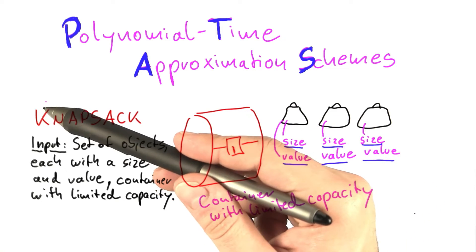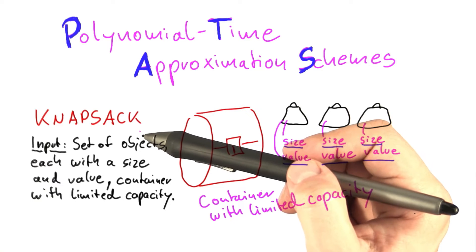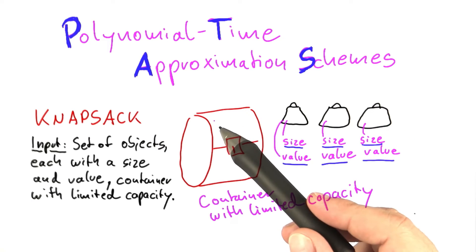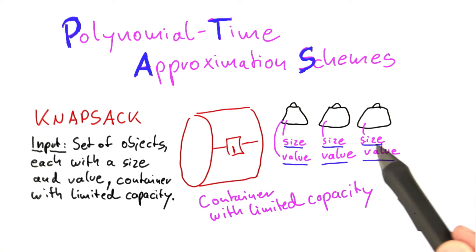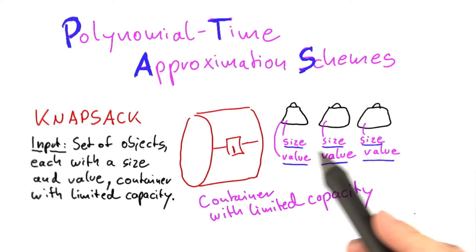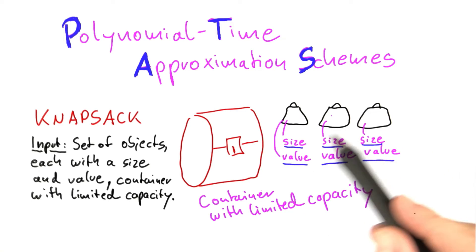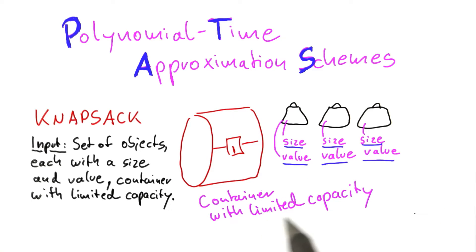That is why I'm going to introduce a new NP-complete problem called Knapsack. A knapsack is very simple to describe. Knapsack gives you as input a set of objects, and each object has a size and a value, and those are both integer numbers. Additionally, you have a container, and that container has a limited capacity, which is also an integer.